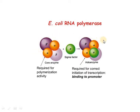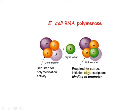Jo molecule, jo enzyme responsible hai RNA banaane ke liye, uska naam hai RNA polymerase. Prokaryotes mein ek hi tarah ka RNA polymerase hota hai. Iske bahut saare sub-units hain — kuch sub-units hain jo milke core enzyme banaate hain, which are required for polymerization activity. Beta aur alpha sub-units hote hain. Aur whole enzyme tab banta hai jab iske saath sigma factor bhi aake judta hai. Sigma factor ki requirement mainly binding to promoter ke liye hoti hai.